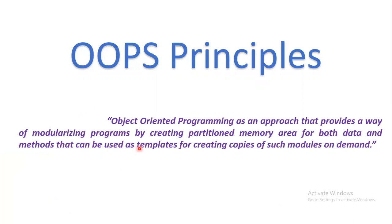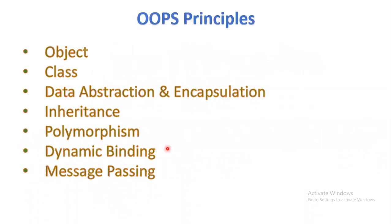Whenever we create an object, memory is allocated. In that memory we can store data and methods. We can create such objects from a class, so the class acts as a basic template in OOP. The main object-oriented programming principles are: object, class, data abstraction and encapsulation, inheritance, polymorphism, dynamic binding, and message passing.